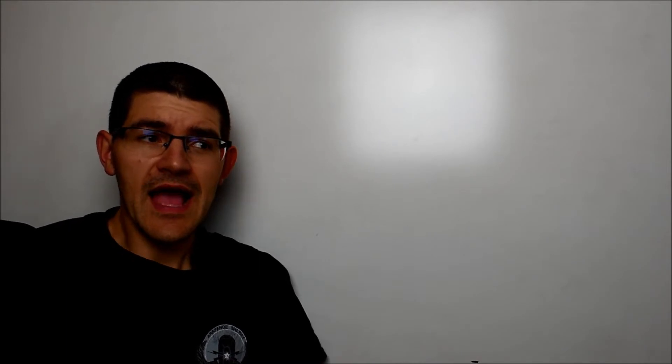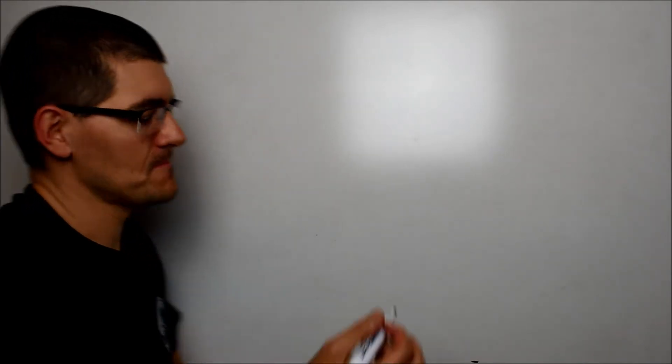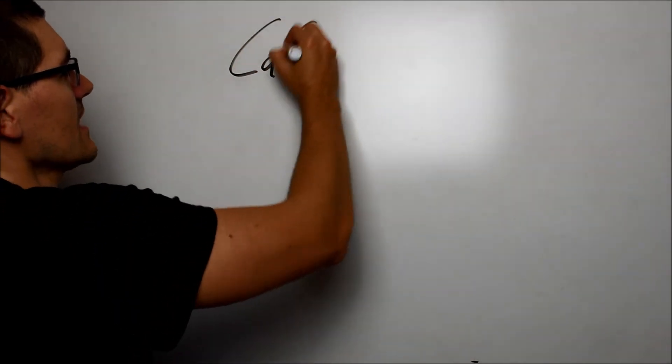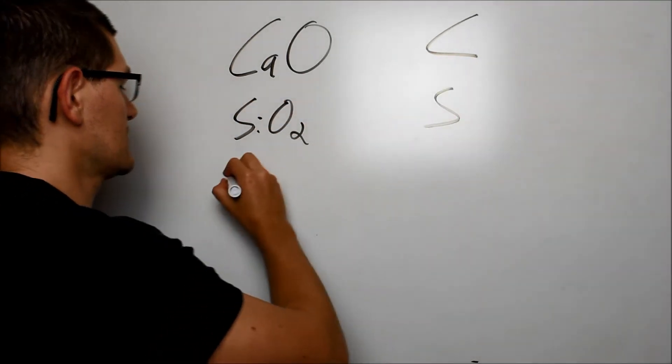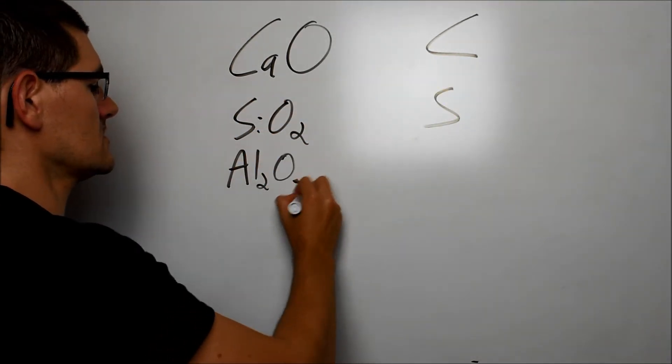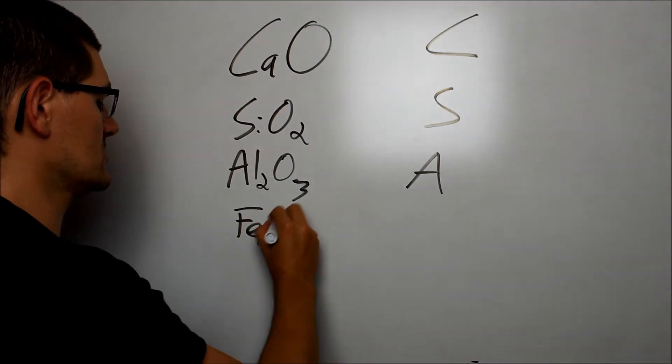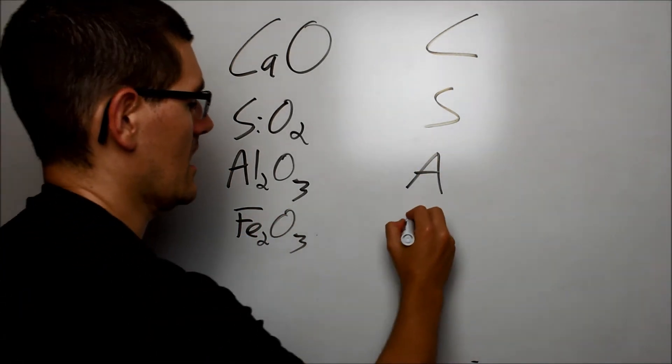Super awesome bonus round. Did you know there's a thing called cement chemist notation? If you remember my gigantic allite-bellite reactions, it's a way for the cement chemist to abbreviate all those different oxides and stuff in a way that makes it easier to see those reactions. I've been a chemist professionally for almost a decade and I have never heard of this. Check it out. Something like calcium oxide turns into C, silicon dioxide turns into S, aluminum oxide turns into A, and our iron oxide turns into, you guessed it, F.